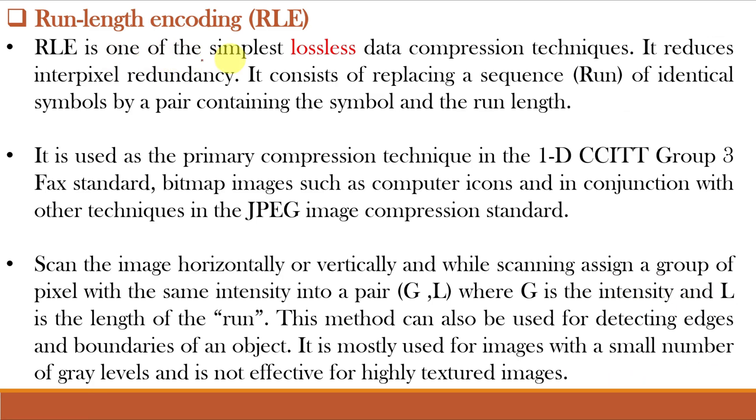Run length encoding is one of the simplest lossless data compression techniques. It reduces interpixel redundancy. It consists of replacing a sequence or run of identical symbols by a pair containing the symbol and the run length. It is used as the primary compression technique in 1D CCITT group 3 FAX standard, bitmap images such as computer icons and in conjunction with other techniques in the JPEG image compression standard.